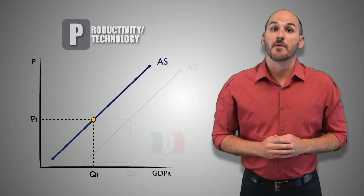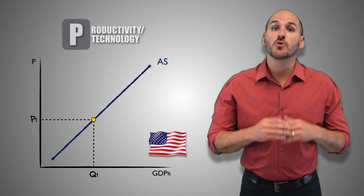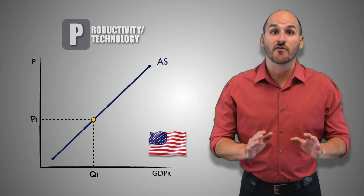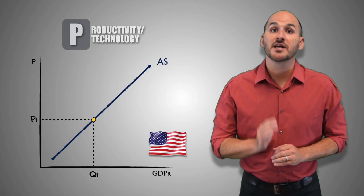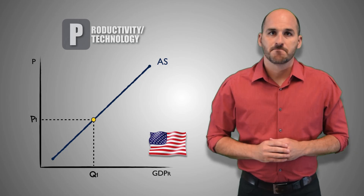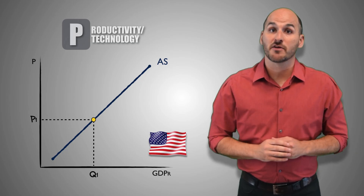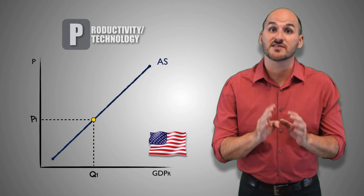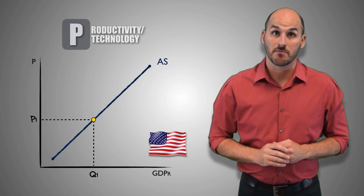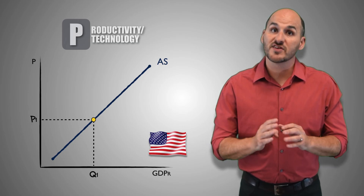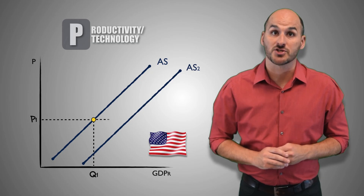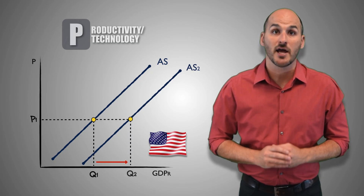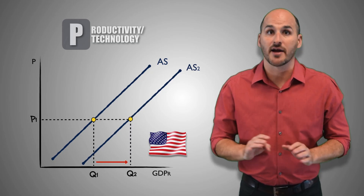Now suppose that American computer scientists develop a new automation program that increases the productivity of every American factory by 200%. This means American firms can produce three times as many goods and services as they used to in the same amount of time. This increase in productivity due to technology will cause an increase in short-run aggregate supply across the entire economy.